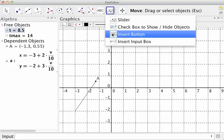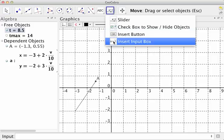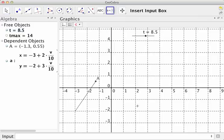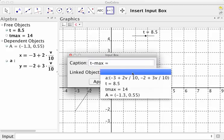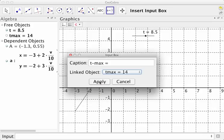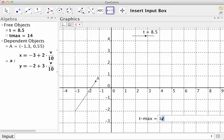So tmax equals, and then link to object here. I would want it to link to tmax. Apply, and you can see right now it's 14. But now if I change this to 6, you can see that the slider just changed and now has a maximum of 6.